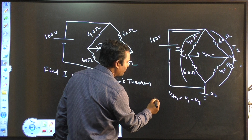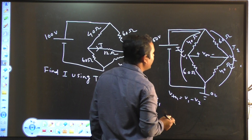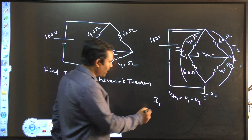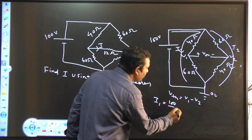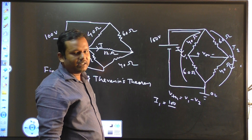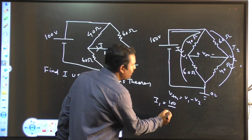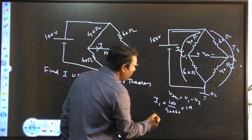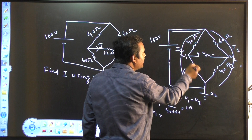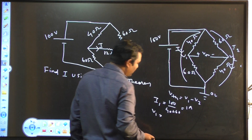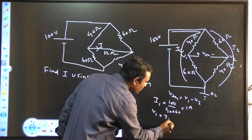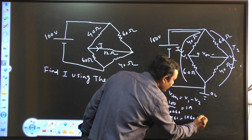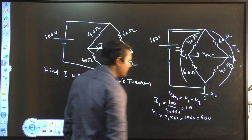I1 will be: this 40 and 60 are connected in series and the net voltage across this 40 and 60 is 100 volt. So your I1 will be 100 volt divided by 40 plus 60, this will be 1 ampere. So your V1, this potential, is this current I1 into resistor 60 ohm. So V1 will be I1 into 60, this will be 1 into 60, this will be 60 volt. So V1 is 60 volt.